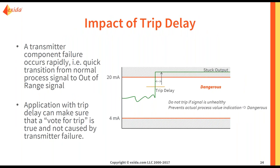There is also the impact of trip delay. Trip delays allow for a certain amount of time between a fail high and a planned trip to ensure the process value is healthy. If the value remains out of range, we know it is a transmitter issue and not a hazardous event. This would be a dangerous failure as the transmitter cannot detect a hazard and the plant is not tripping. So that is something to keep in mind.